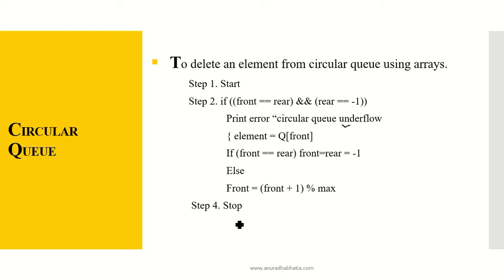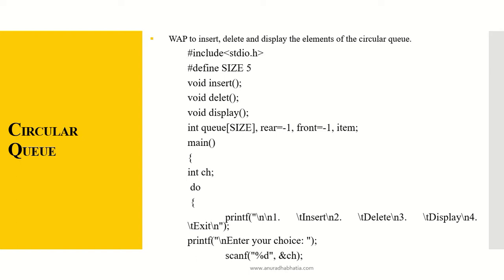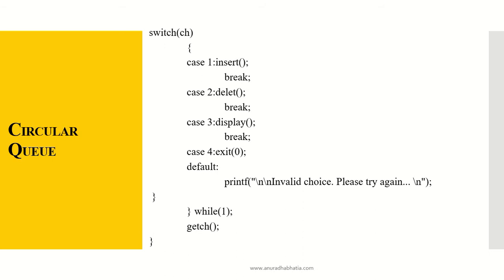We now write a menu-driven program to insert, delete, and display the elements of a circular queue. There are functions for insert, delete, and display. The menu prints: 1 to insert, 2 to delete, 3 to display, and 4 to exit. A switch-case handles each choice, and any other input prints an invalid choice message. The loop continues while the answer is 1.